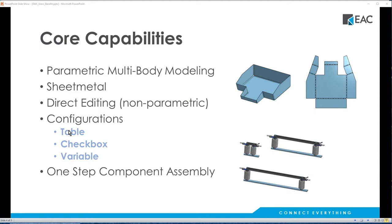Most CAD systems use a table approach — you put all your different options and parameters into a table and pick which things to build a configuration. Those tables can get really big if there are a lot of variations. Onshape breaks it into three different areas: a table, a checkbox for which features or parts you see or don't see, and a variable that drives information. By breaking it up this way, we can drive hundreds or thousands of different configurations from just a couple of picks. Also, assembling components uses 'mates,' and you usually only need one mate on each component — a one-step assembly, which saves a lot of time.